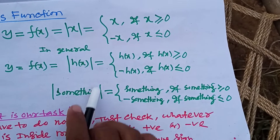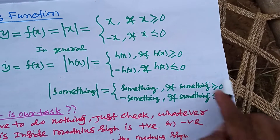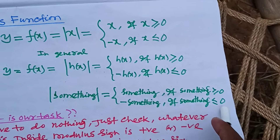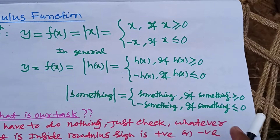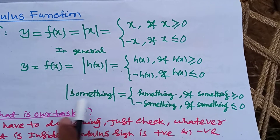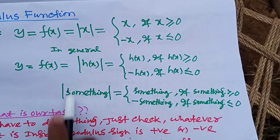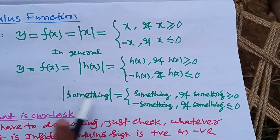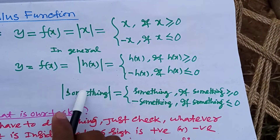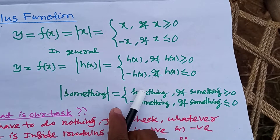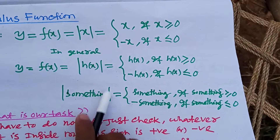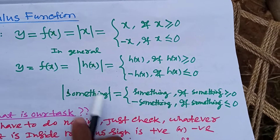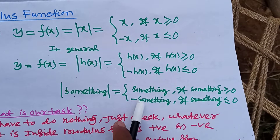In general, the modulus of something equals that something if it is greater than or equal to zero, or minus that something if it is less than or equal to zero. If this something is less than or equal to zero — that means it is a negative quantity — just copy paste it with a negative sign before it.